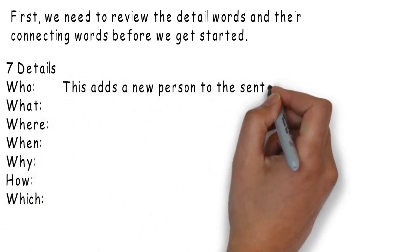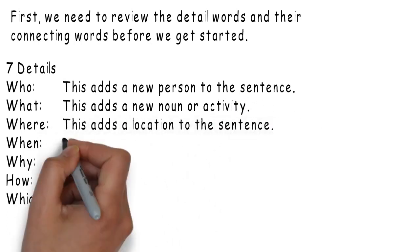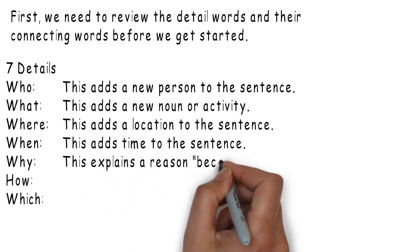Who – this adds a new person to the sentence. What – this adds a new noun or activity. Where – this adds a location to the sentence. When – this adds time to the sentence.